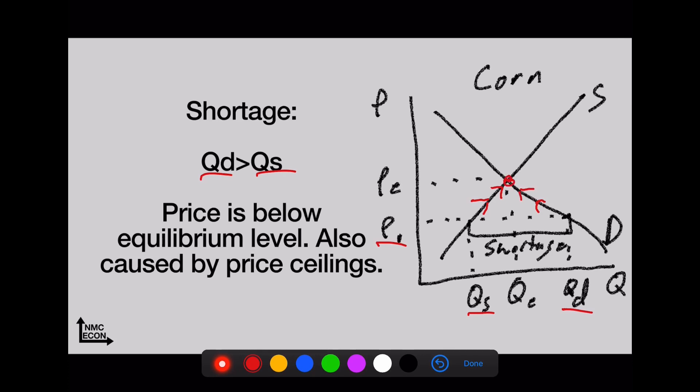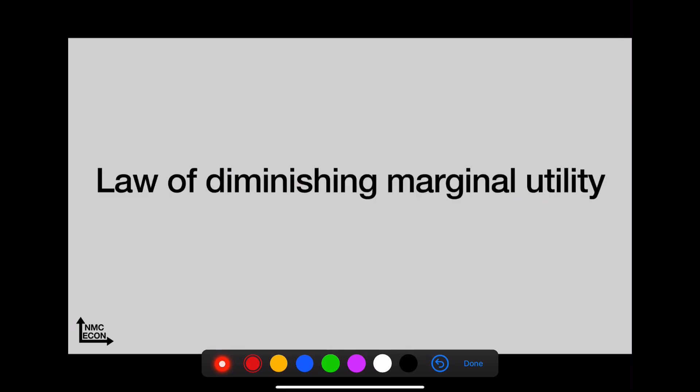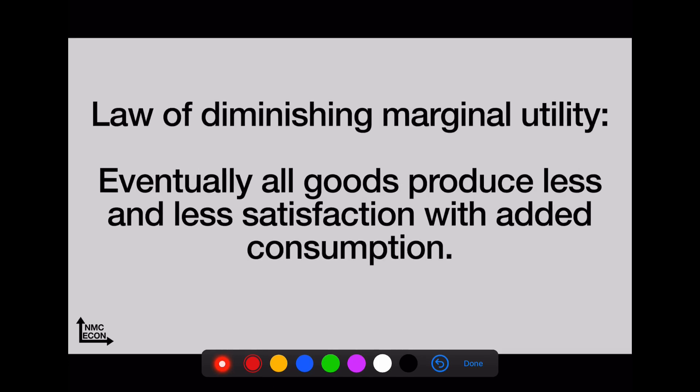The law of diminishing marginal utility states that eventually all goods produce less and less satisfaction with added consumption. Think about the last bag of chips you ate. Eventually those chips don't taste very good. You start to get kind of sick.